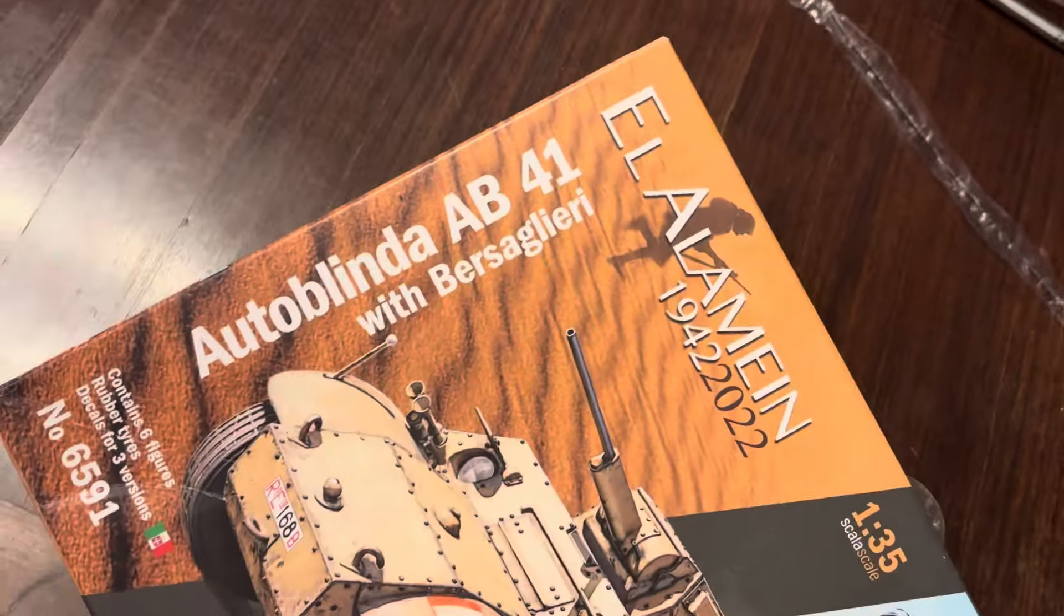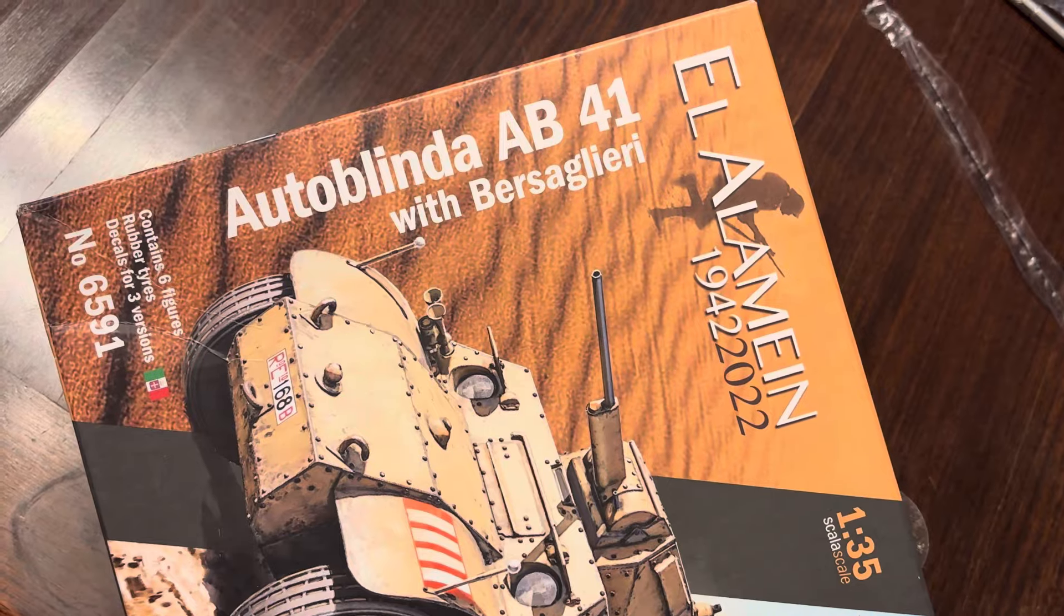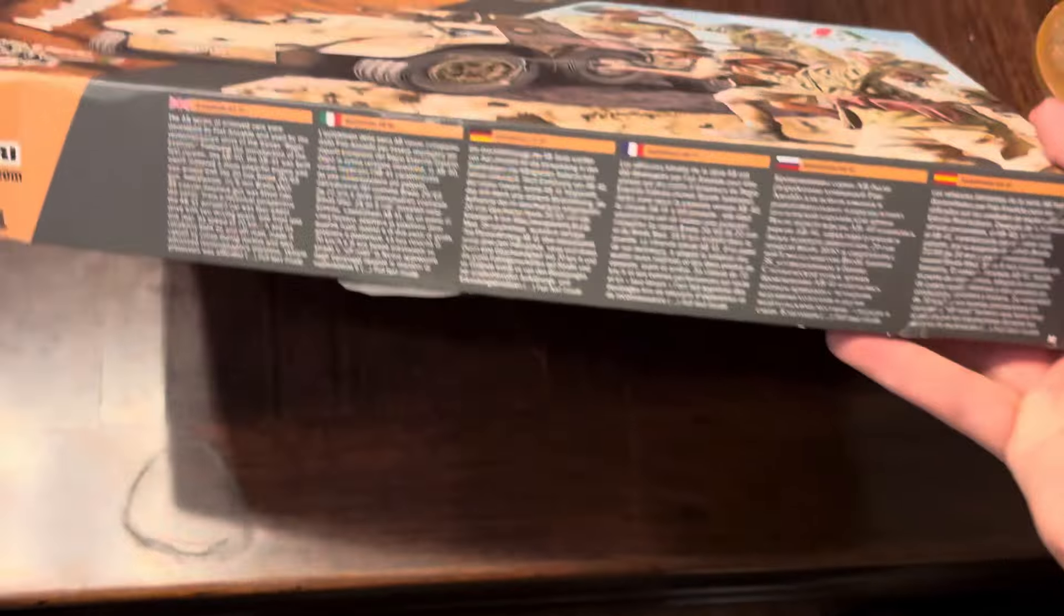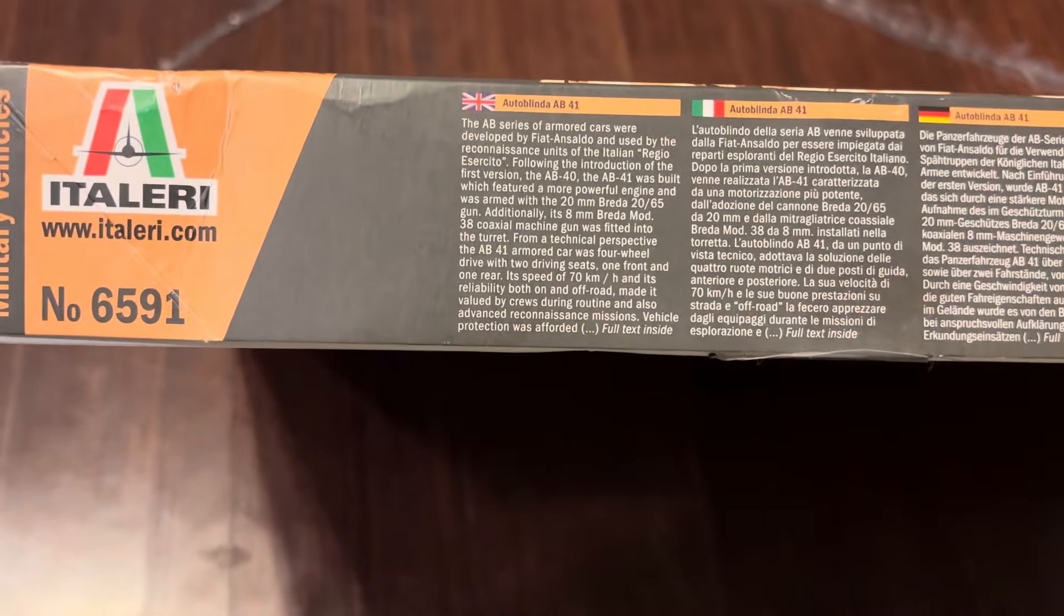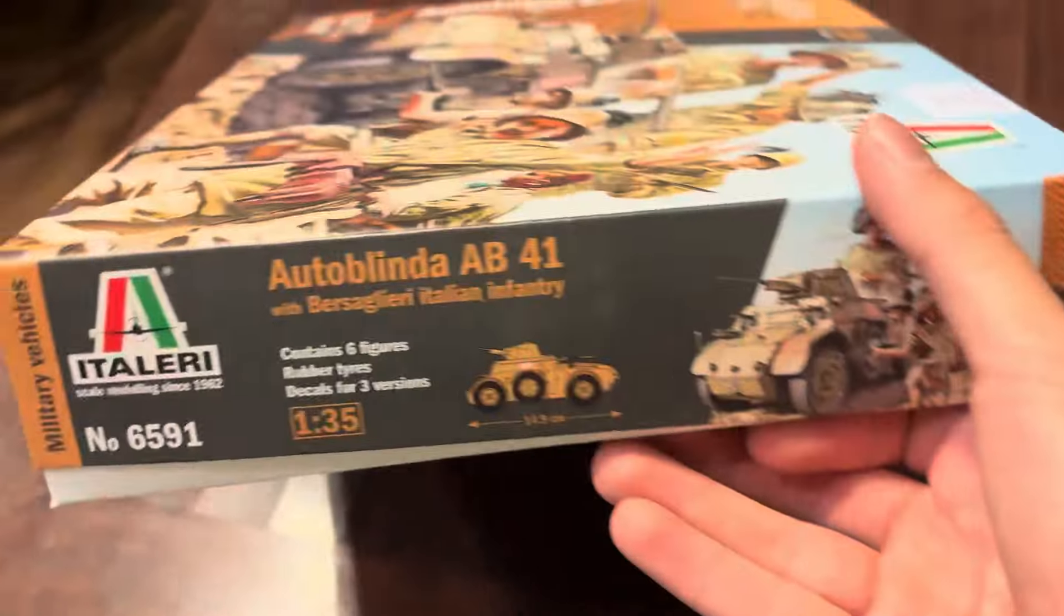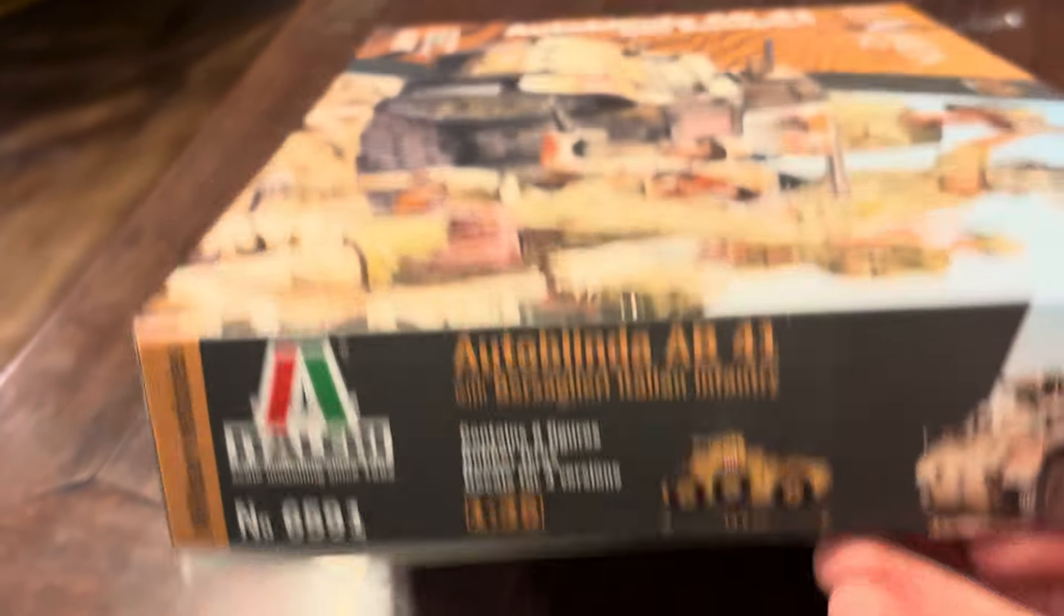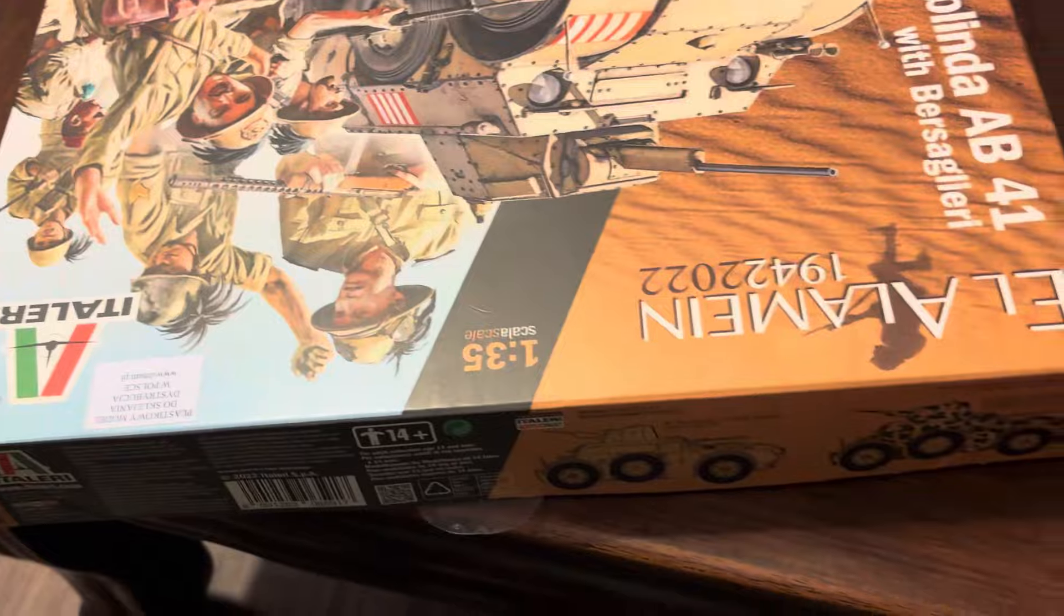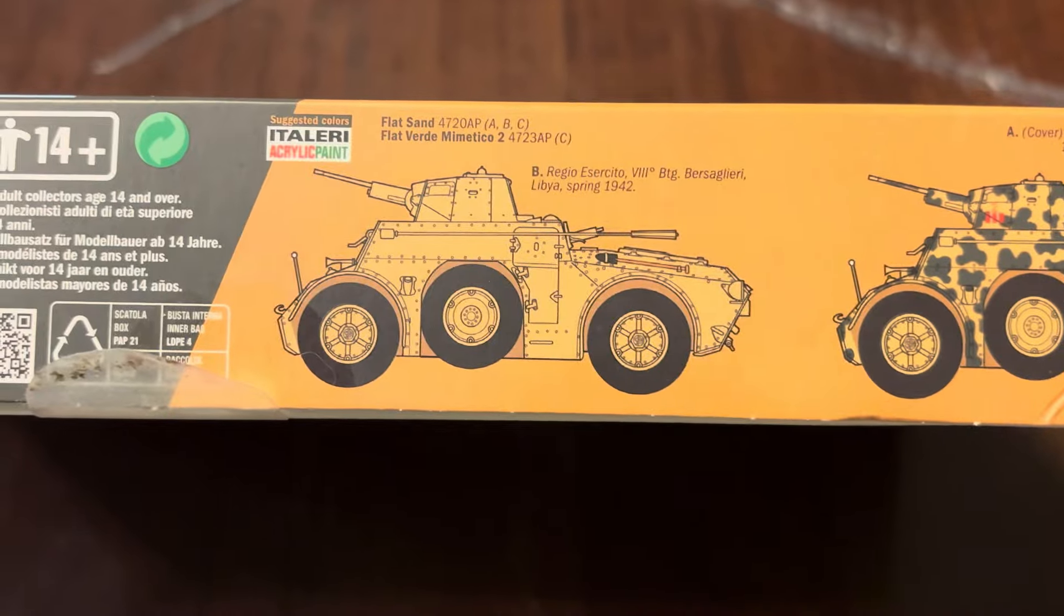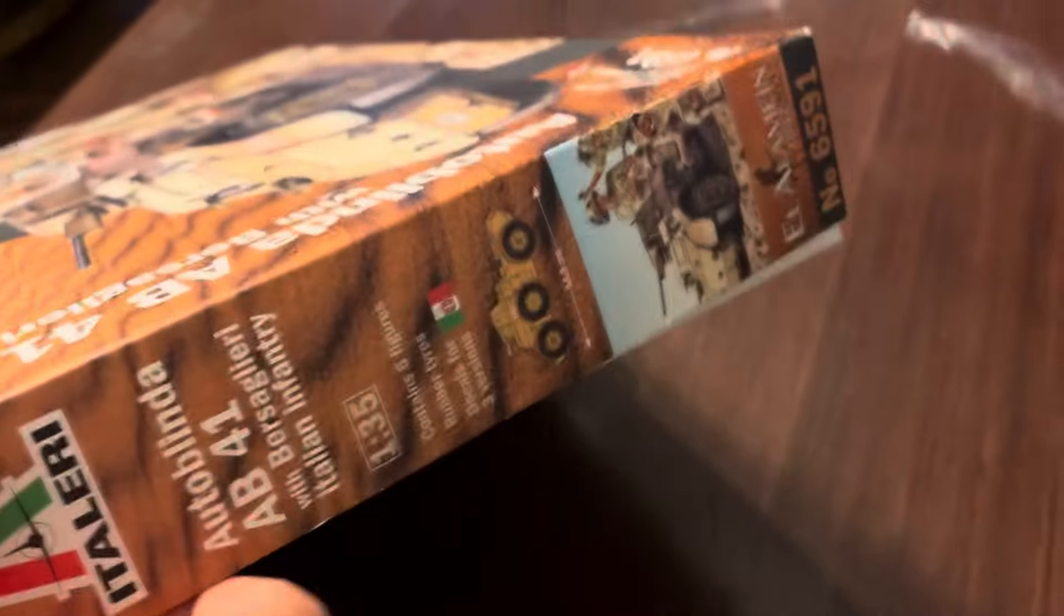This is the Italeri El Alamein 2022 AutoBlinda AB41 with Bersaglieri. Here is the box with information if you want to pause and read. The kit contains six figures, rubber tires, and details for three versions. Here are some camo schemes on the side.